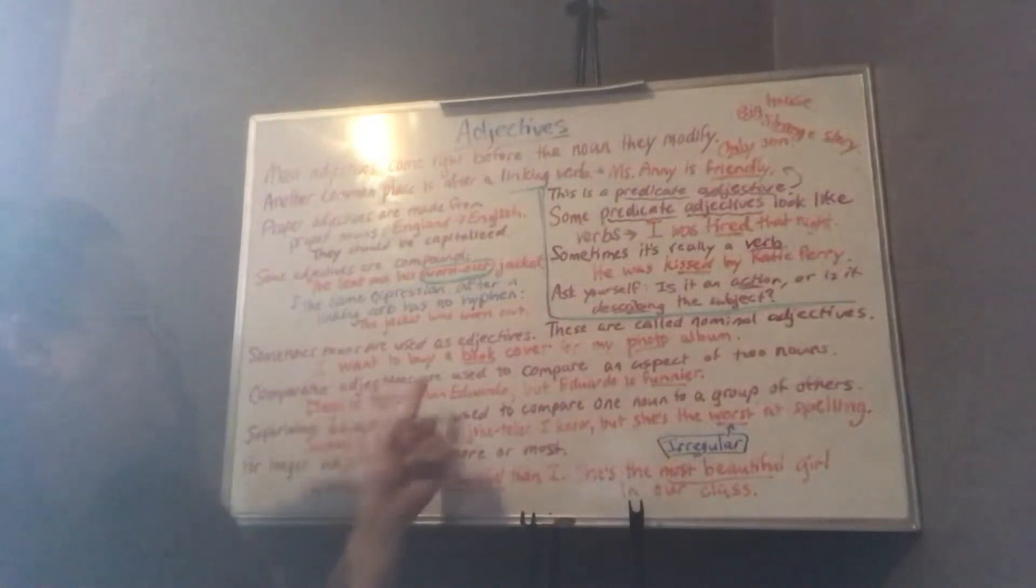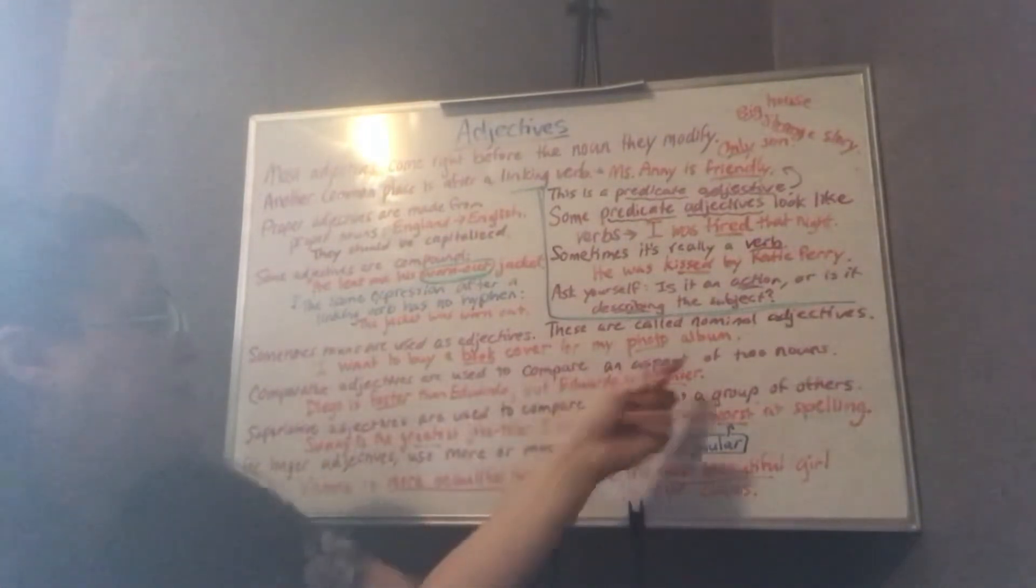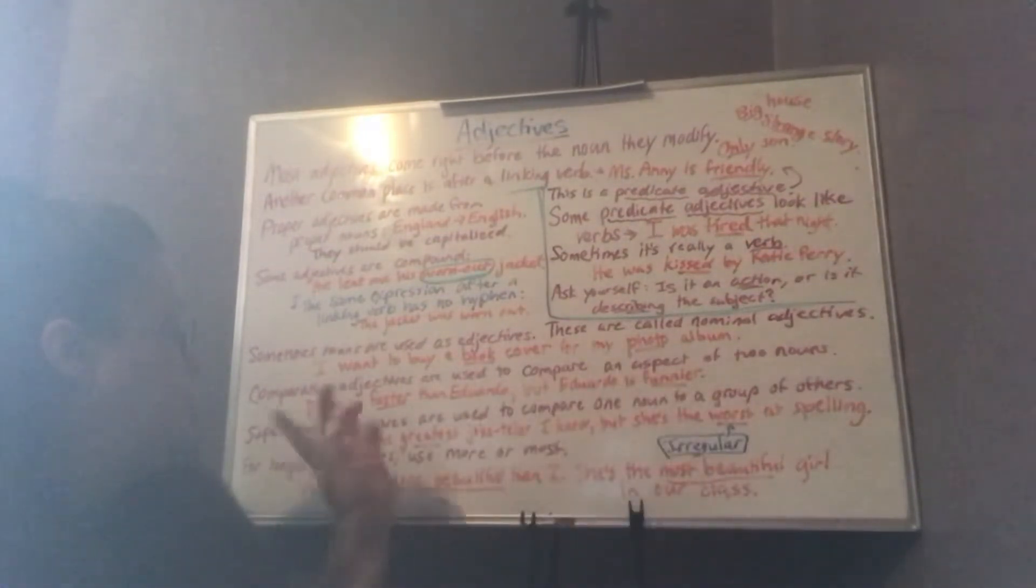Comparative adjectives are used to compare an aspect of two nouns. So, Diego is faster than Eduardo. We're comparing the two boys. One is faster than the other one, but Eduardo is funnier. And you can see the different ways here of forming comparative and in a minute superlative adjectives.